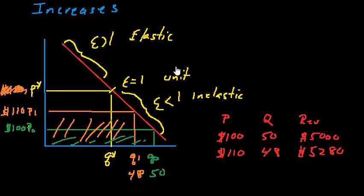When we looked at this demand curve, we said this is airline one's demand curve — the demand curve facing one airline in the market — but there's also a market demand curve. For simplicity, let's say that in this market there are two airlines, airline one and airline two, and they both face the exact same demand curve. So they both have the same exact prices: at $100, there were 50 seats demanded; at $110, there are 48 seats demanded. Both airlines have the exact same demand curve.